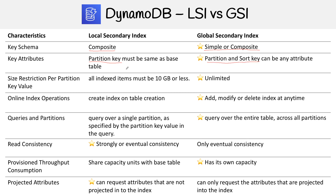For size restrictions, the LSI has to be 10 gigabytes or less for all index items. For GSIs, it's unlimited. For online index operations, with LSI the only time you can create indexes is on table creation. But for GSIs, you can add, modify, or delete indexes at any time — and you can also create them at the time of table creation if you want.